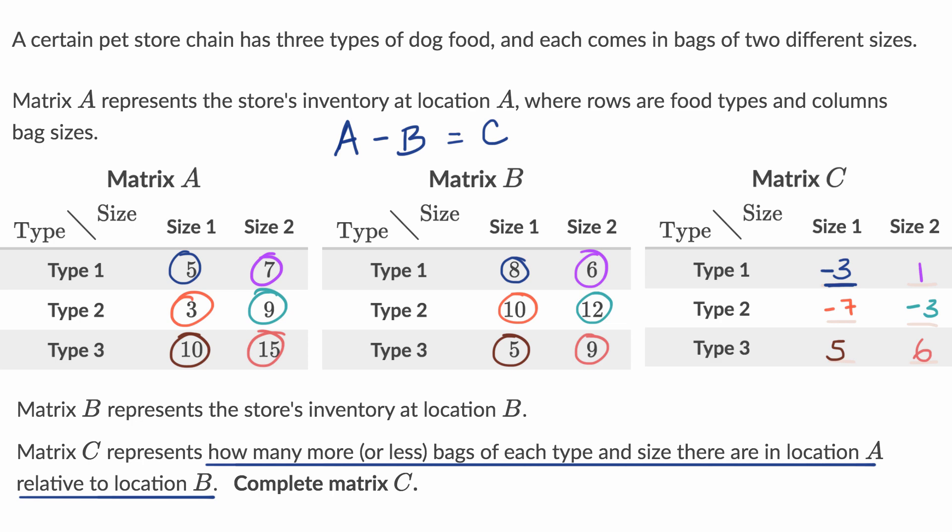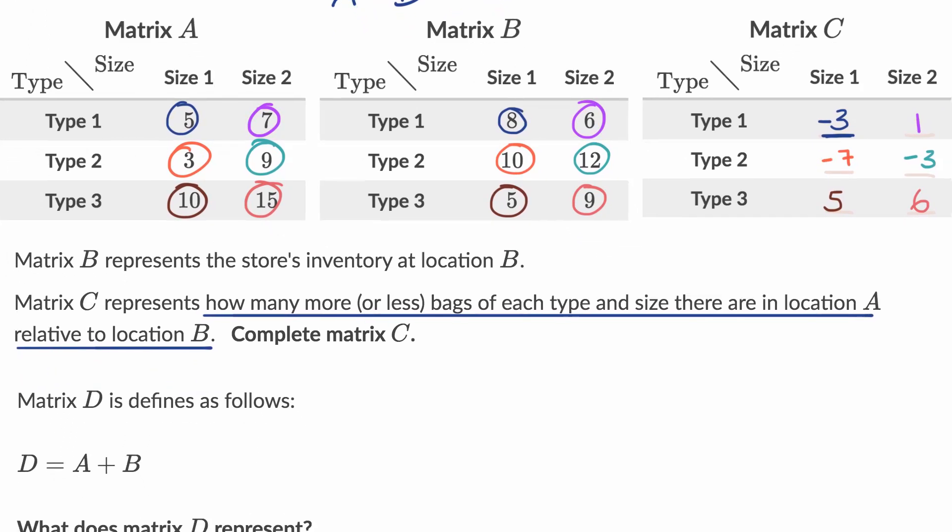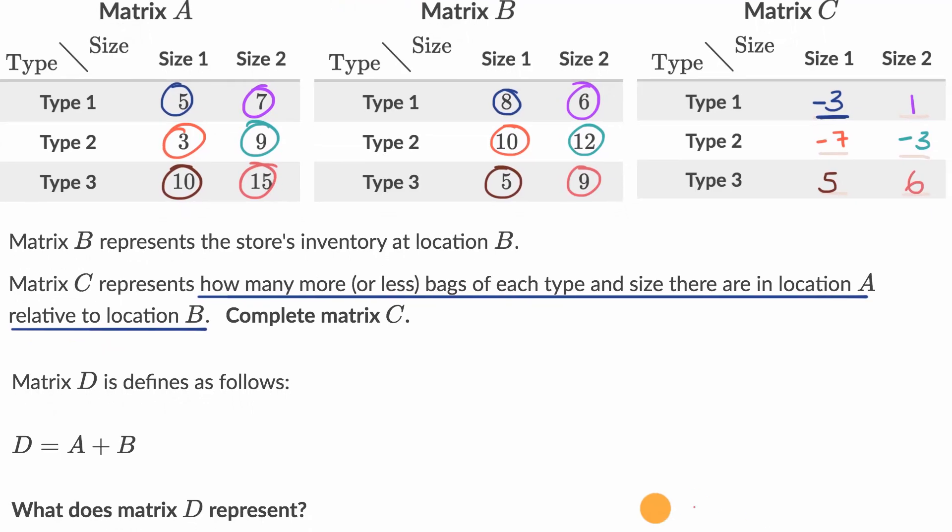Now we have one last question here below the screen. They tell us that matrix D is defined as follows. D is equal to A plus B. What does matrix D represent?